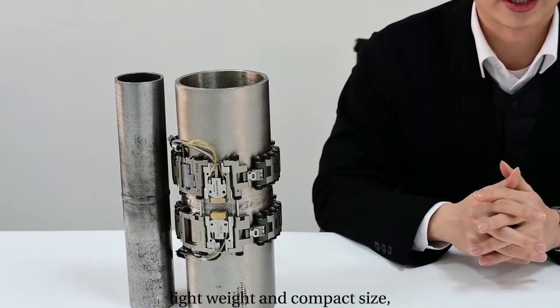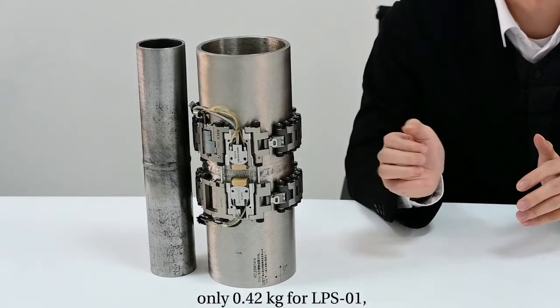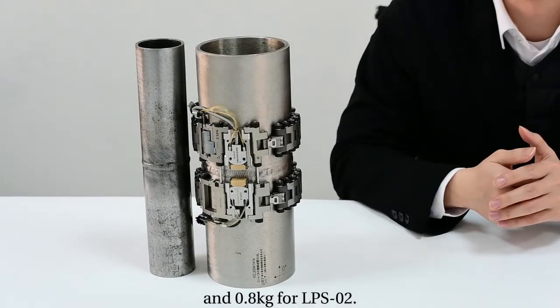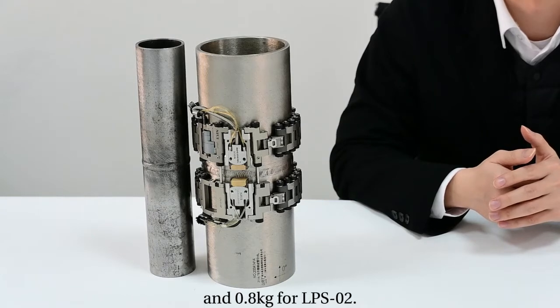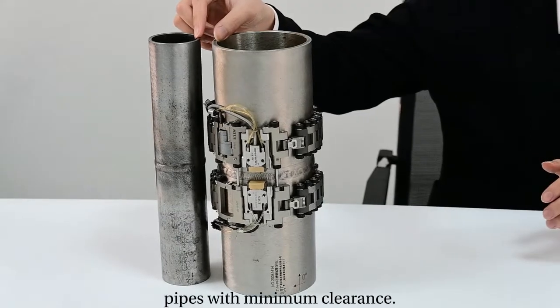They have lightweight and compact size, only 0.42 kg for LPS-01 and 0.8 kg for LPS-02. They can be used to inspect pipes with minimum clearance.